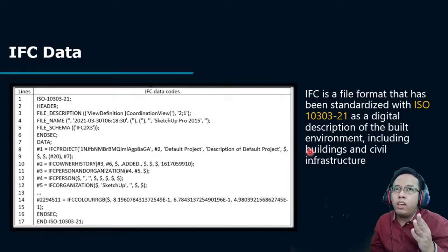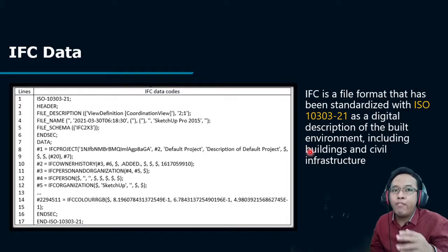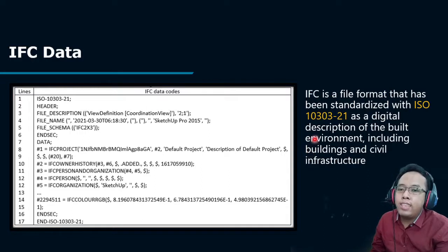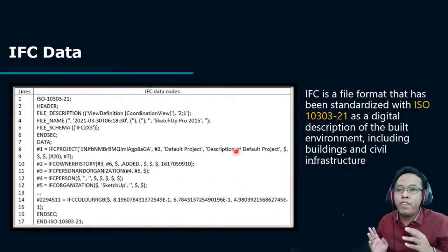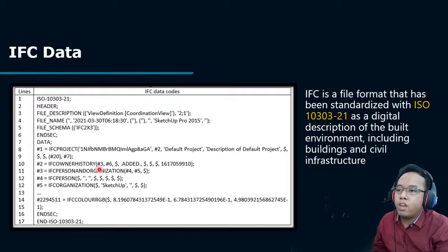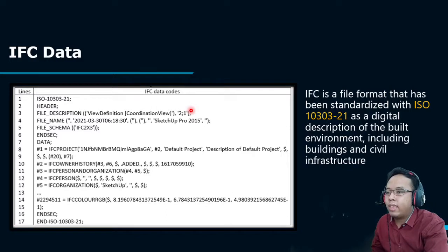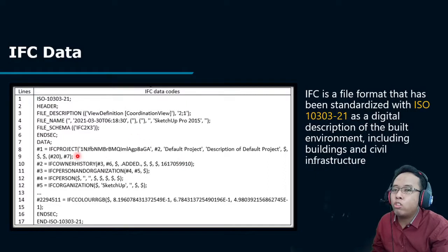Based on the house modeling, we then exported the data into IFC data format. IFC is a file format standardized with ISO 16739-1 as a digital description of a built environment including buildings and civil infrastructure. This is the content of the IFC file, which contains a script with information about our design model based on Google SketchUp.